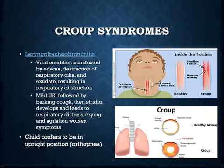Other treatments for croup include a humidifier and temperature changes. Parents can take the child into a bathroom with hot water running to inhale steam, or take them outside in cold winter air — cold air helps decrease airway swelling and works very well. In a hospital setting, a mist tent may be used, though these are now rarely seen due to infection risk.